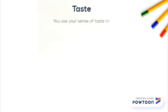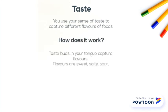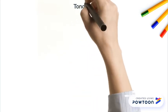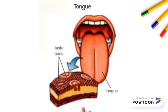Taste. You use your sense of taste to capture different flavors of foods. How does it work? Taste buds in your tongue capture flavors. Flavors are sweet, salty, sour, bitter, and umami. This is a picture of your tongue where you can see the taste buds.